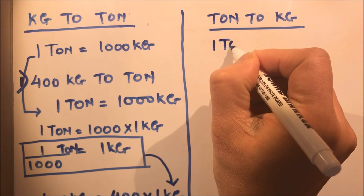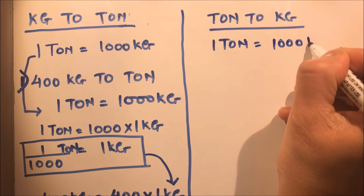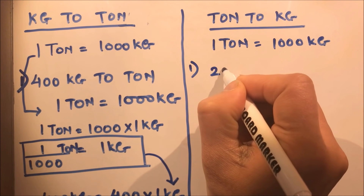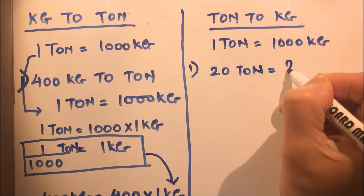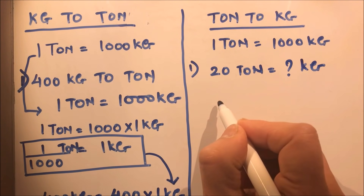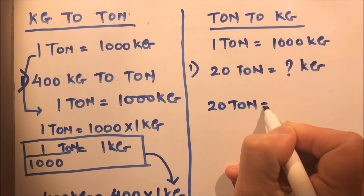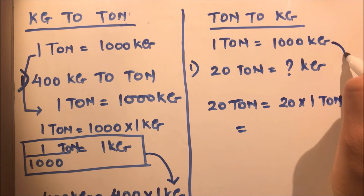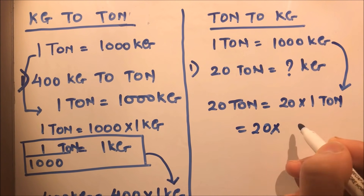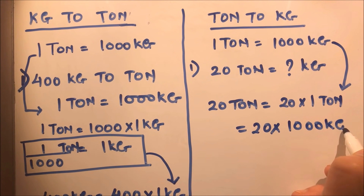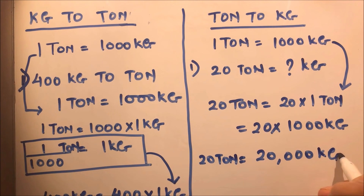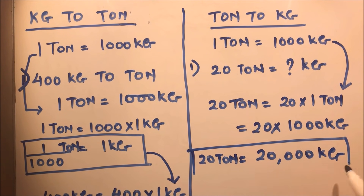As we know, one ton is one thousand kilograms. If we need to convert 20 tons to kilograms: 20 tons can be written as 20 times one ton, and in place of one ton we write in terms of kilograms. So this will be 20 times one thousand kilograms, which is equal to twenty thousand kilograms. So 20 tons equals 20,000 kilograms. This is how we can convert any kilograms to tons or tons to kilograms. Thanks for watching.